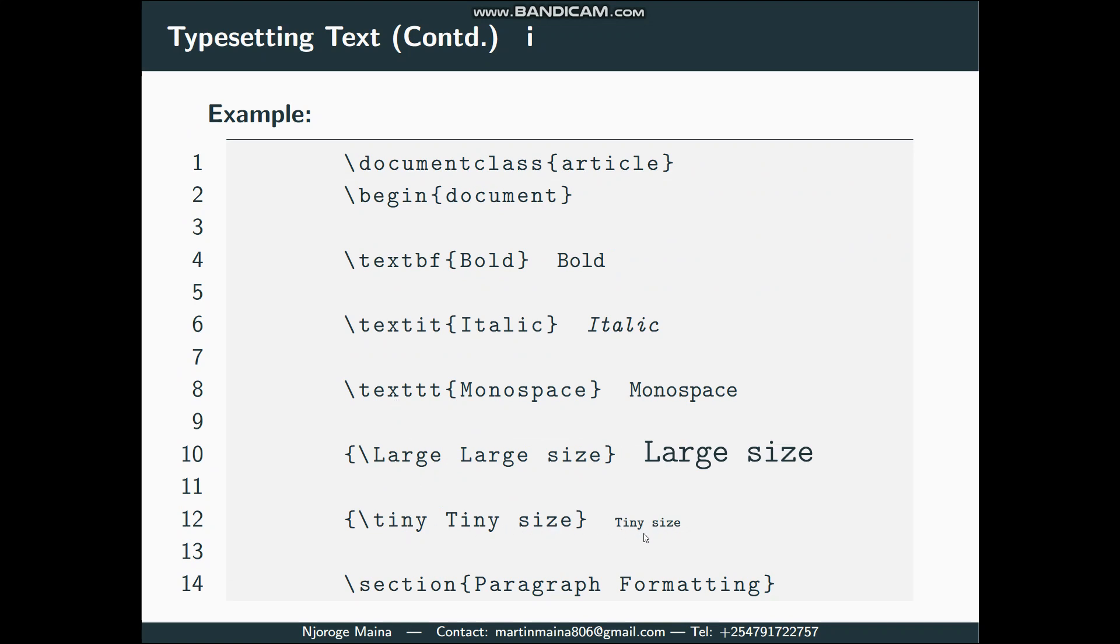Then a section - section formats a section and this one will be numbered. Sections are very important when you want to populate the table of contents. You just call the table of contents after the begin document, and then all the sections, subsections, chapters, and parts will be populated and used to populate the table of contents.